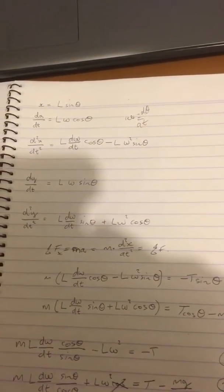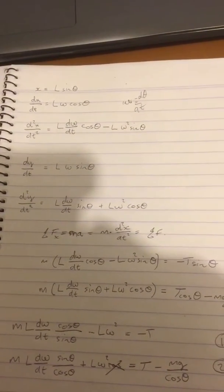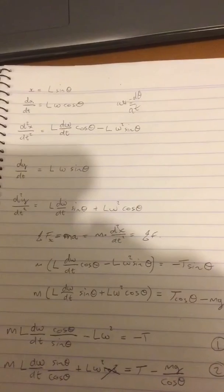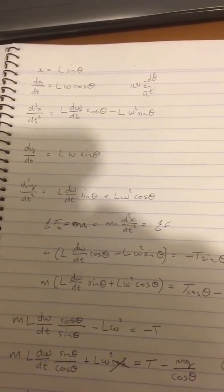And remember that's just an application of the chain rule. So you take the derivative again, so the second derivative is as there: L d omega dt cosine theta minus L omega squared sine theta. Then you move on.